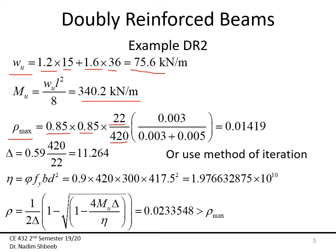Since we have Grade 60 steel, ε_t = 0.005, giving rho_max = 0.01419. Using the given B and H with the rho formula — where δ = 0.59·Fy/F'c and η = φ·Fy·b·d² — I calculate rho = 0.023, which is larger than rho_max. Therefore, we need a doubly reinforced concrete beam.